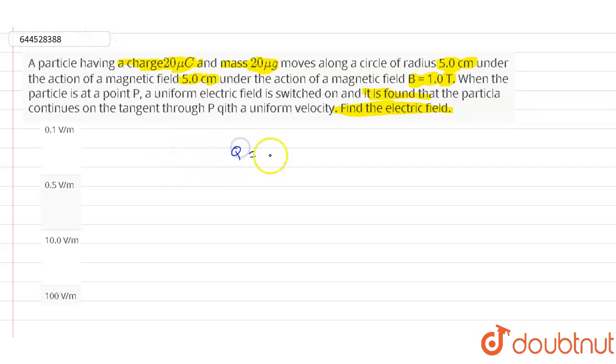So here we have the charge value q equals 20 microcoulombs and we have the mass value also as 20 micrograms, and we have the radius of the circle value also as capital R equals 5.0 centimeters.